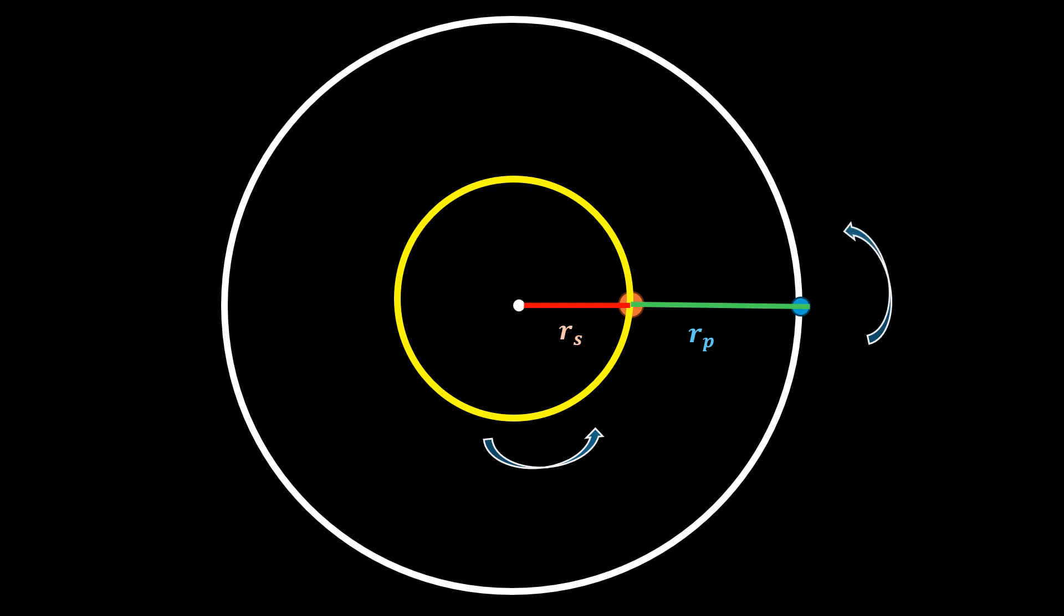Therefore, at some small time t, the Sun will be here and the planet would also have changed position. Since the orbit of the Sun is so small, in this small time the change in position of the planet will be negligible compared to the change in position of the star.